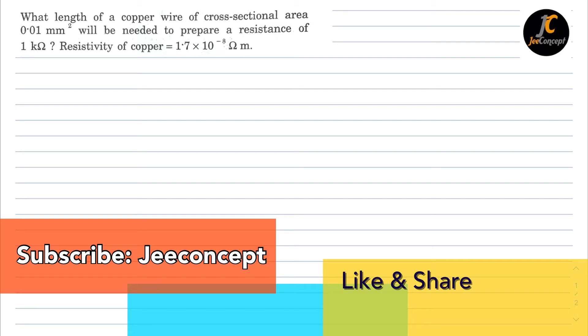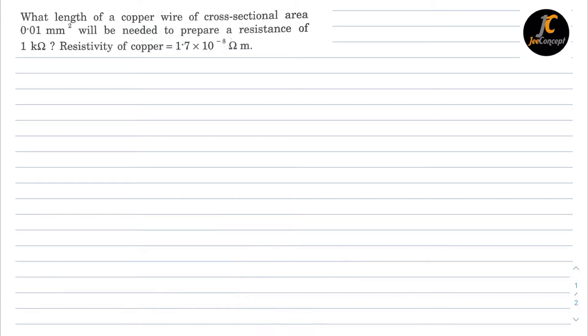Hello everyone, in this video we will find the solution of the problem which says what length of a copper wire of cross sectional area 0.01 mm square will be needed to prepare a resistance of 1 kilo ohm. The resistivity of copper is 1.7 into 10 raised to the power minus 8 ohm meter.